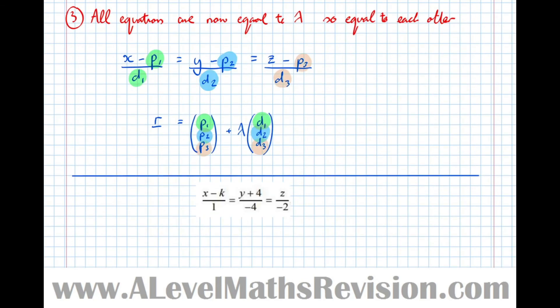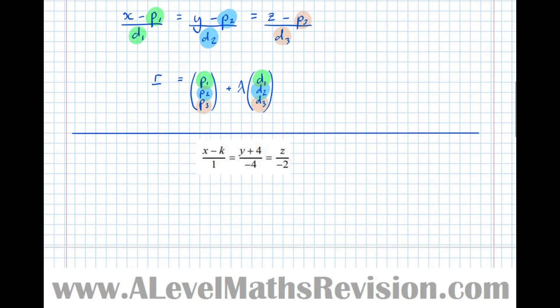So let's look at converting this line from Cartesian form into vector form. We know that any vector equation has r equals a start point plus a parameter lambda times a direction.